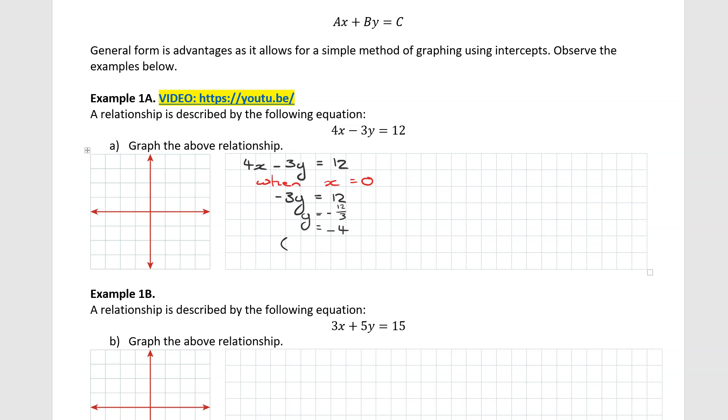So the point we find is that the y intercept is at 0, negative 4. So notice how simple it is to get this y intercept from the general form.